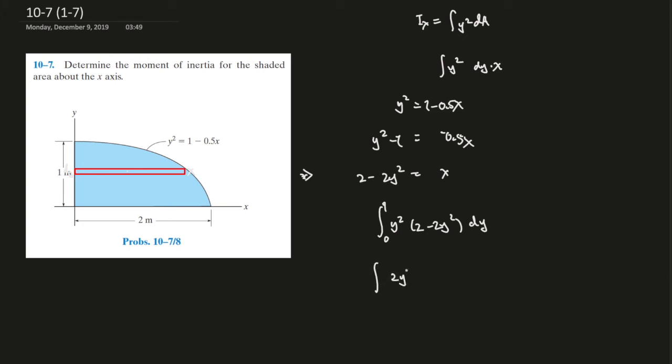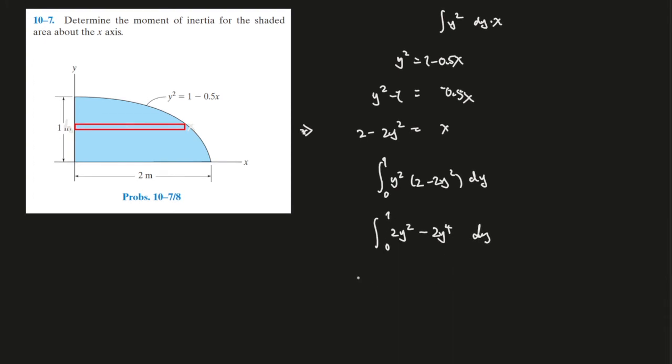Before that we can simplify something, y to the power of this, y to the power of this, y to the power of 4, and 0 on dy, right? So y to the power of 3 over 3, 1 to 0 minus 2 to the power of 5, y to the power of 5 over 5, and this is 1 to 0.